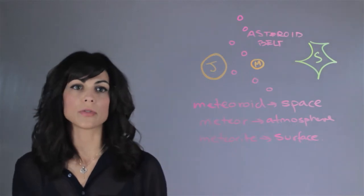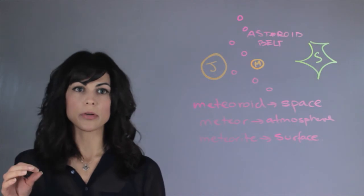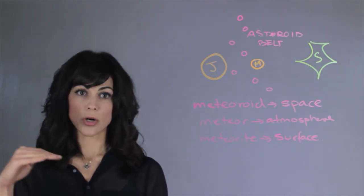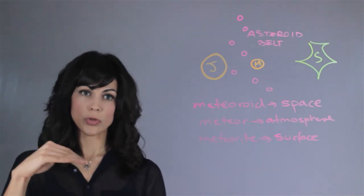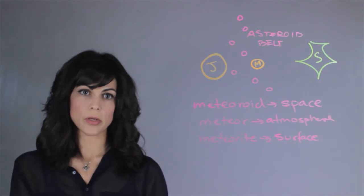So where do meteorites originate? Well, first we get meteoroids from asteroid collisions. And then that meteoroid goes into the Earth's atmosphere, burns through the atmosphere and whatever is left over we pick up here on the surface. And that's what we call a meteorite.